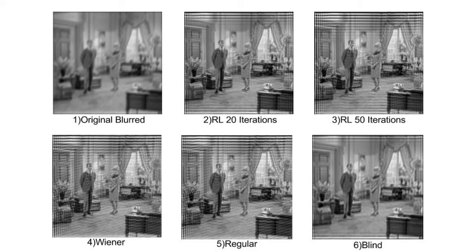Fourth is the Wiener, fifth regular as you can easily notice the ringing effect in both the images. Blind method is very ineffective in deblurring. Hence, we can conclude that Richardson-Lucy is the best method for deblurring.